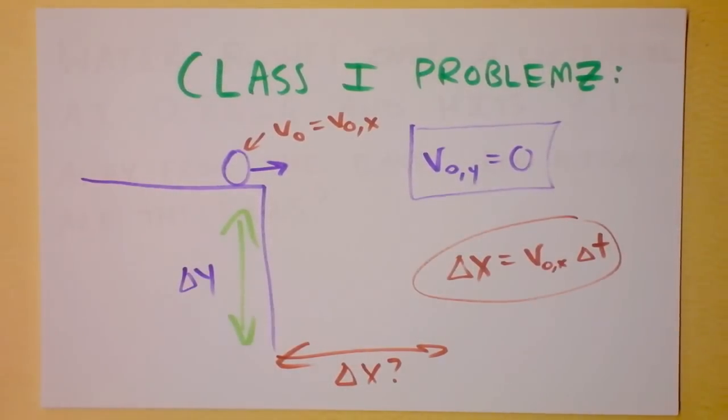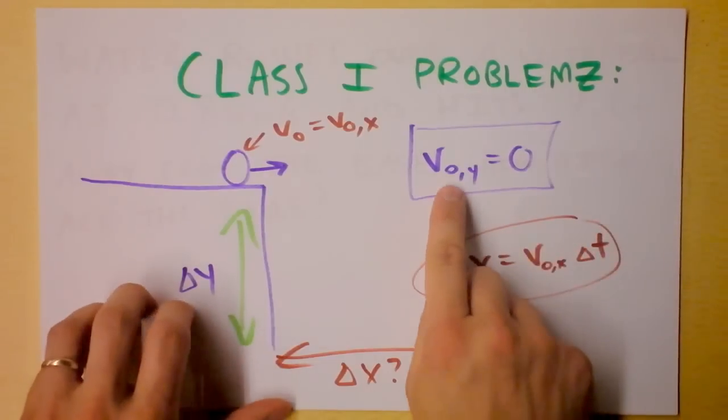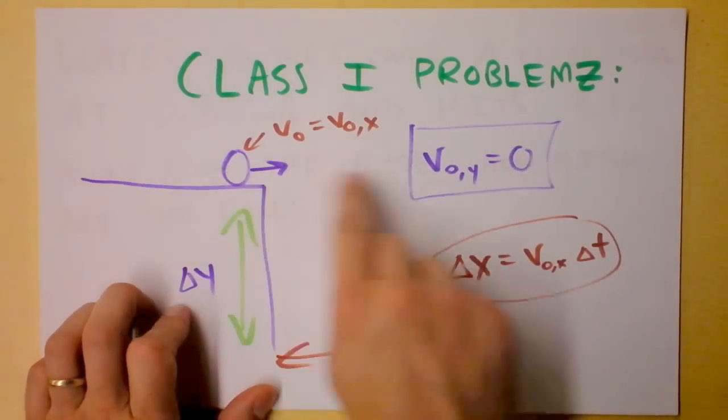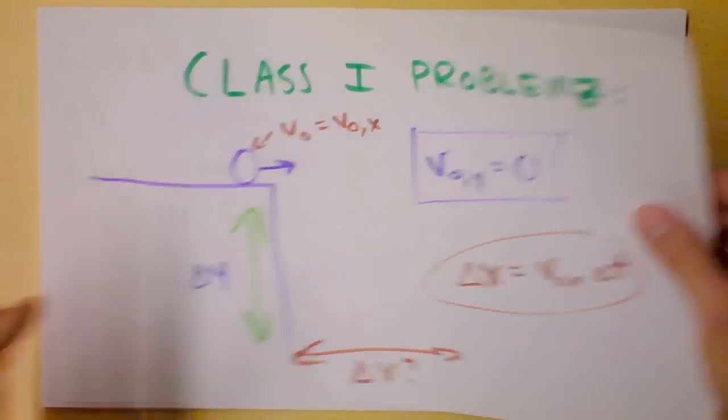I have a third example of a class one problem right here. So class one problems are where the initial velocity in the y direction for projectile is zero. It makes them very simple. Here we go.